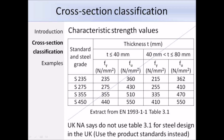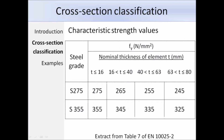The nominal yield strength depends on the steel grade, the standard to which it is produced, and the nominal thickness. For design in the UK, the UK National Annex states that nominal values of yield and ultimate strength should be taken from the product standards; therefore you should not use table 3.1 for UK steel design. Here is an extract from table 7 of EN 10025-2, which has four columns of thickness limits — as thickness increases, yield strength decreases.